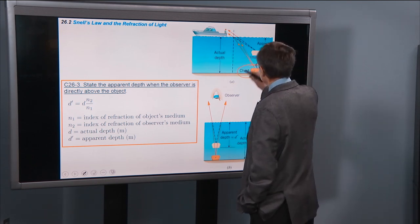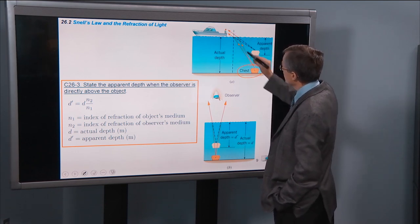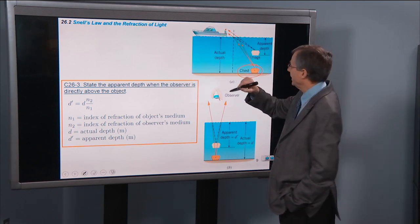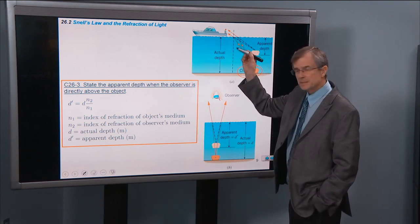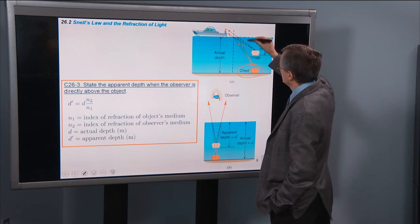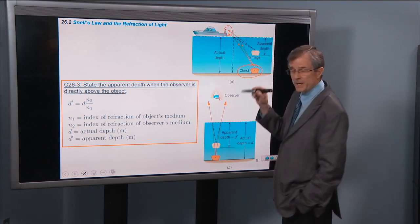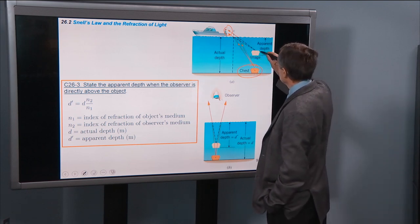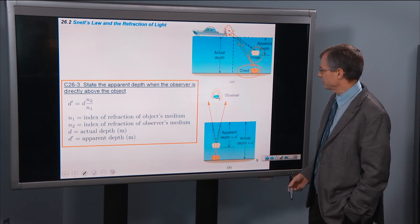So if we have a sunken chest down here, the light rays coming from the chest and coming into my eye when I'm observing from this boat get refracted, or bent, at the interface. But my eye, all it knows is it sees these two rays coming in it, and it thinks that the actual depth is much shallower than it actually is.